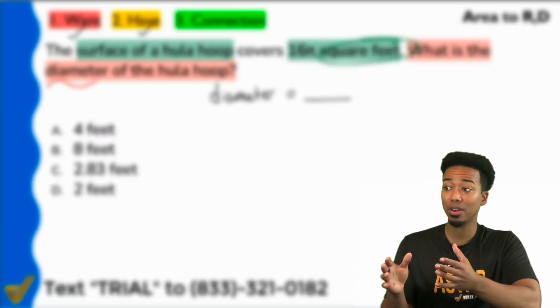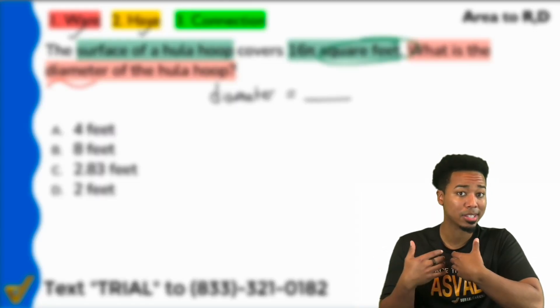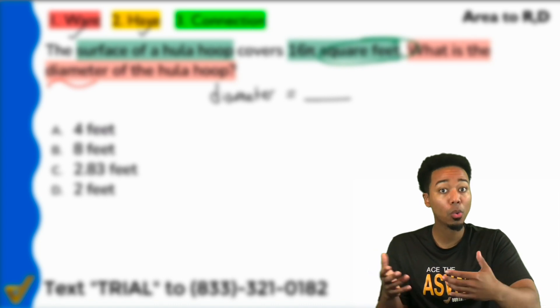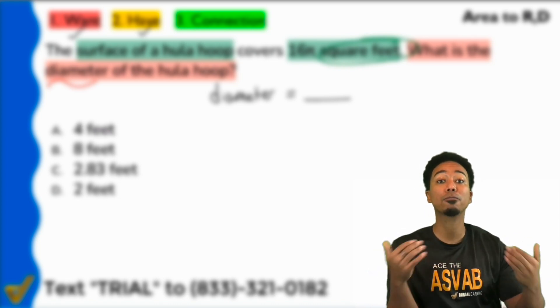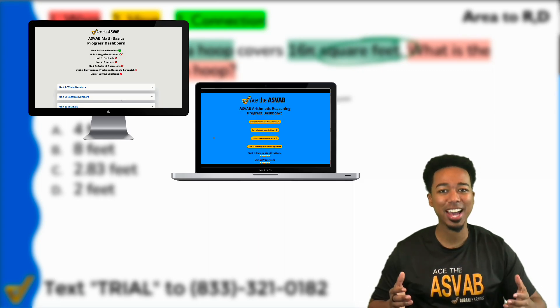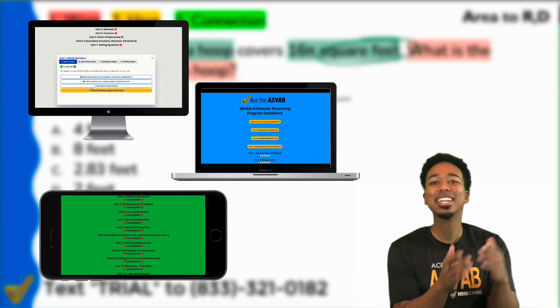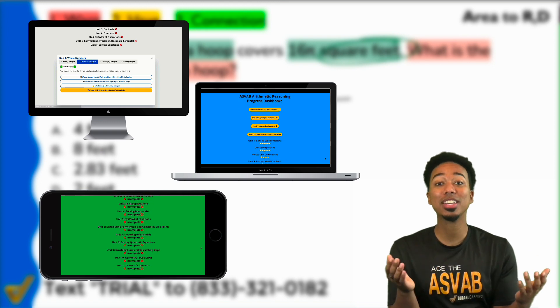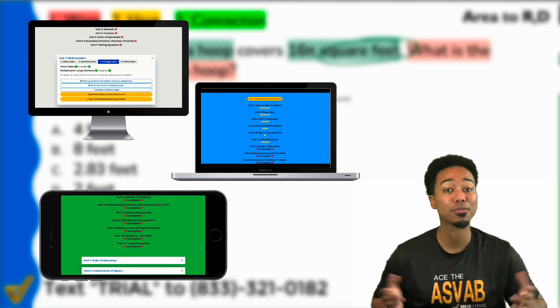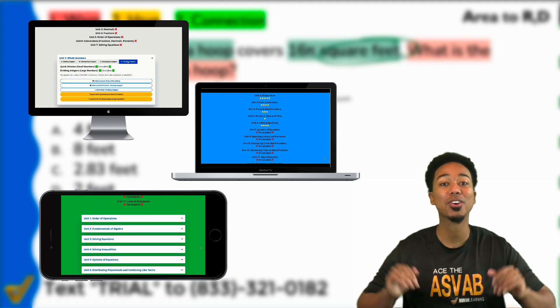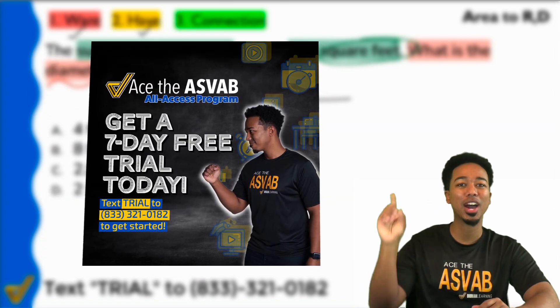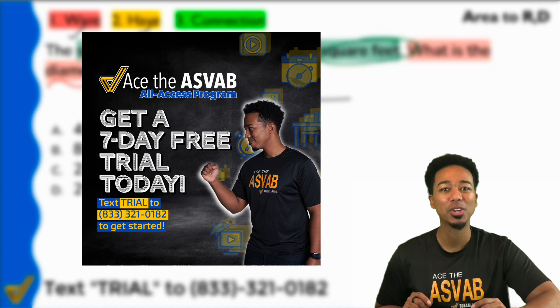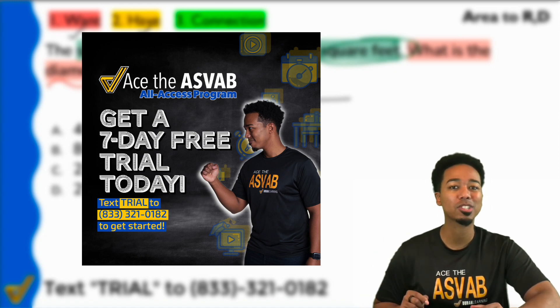The hardest part about practicing for the ASVAB, in my opinion, is knowing when you're ready, knowing that you are good to go and move on from this topic. And that's why our full program has a progress dashboard, letting you know exactly what you're good at and what you need to work on. And the great thing is you can join our full program for free for a full week, no credit card required. That's our trial that's available for you.